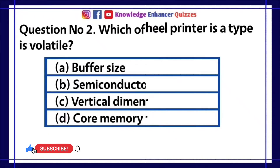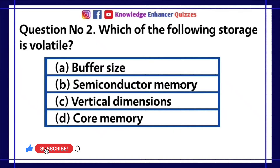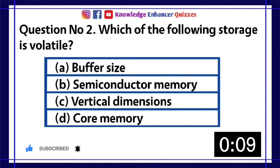Question number 2. Which of the following storage is volatile? A. Buffer Size. B. Semiconductor Memory. C. Vertical Dimensions. D. Core Memory.